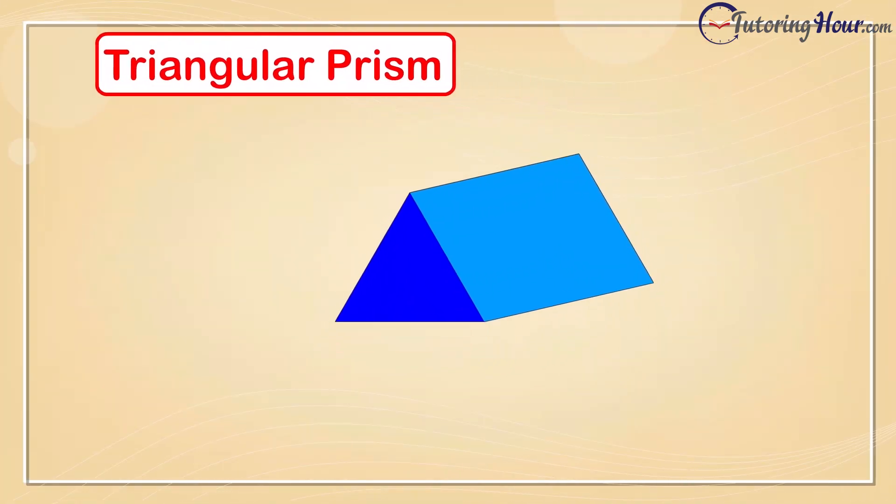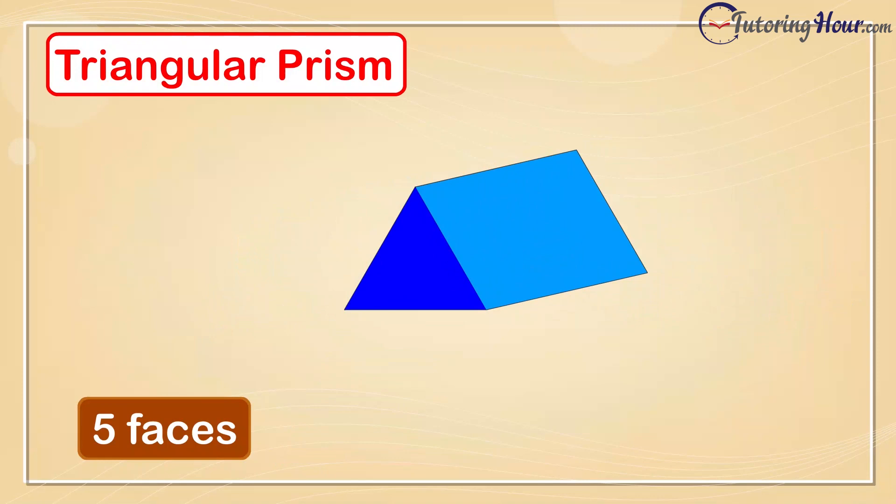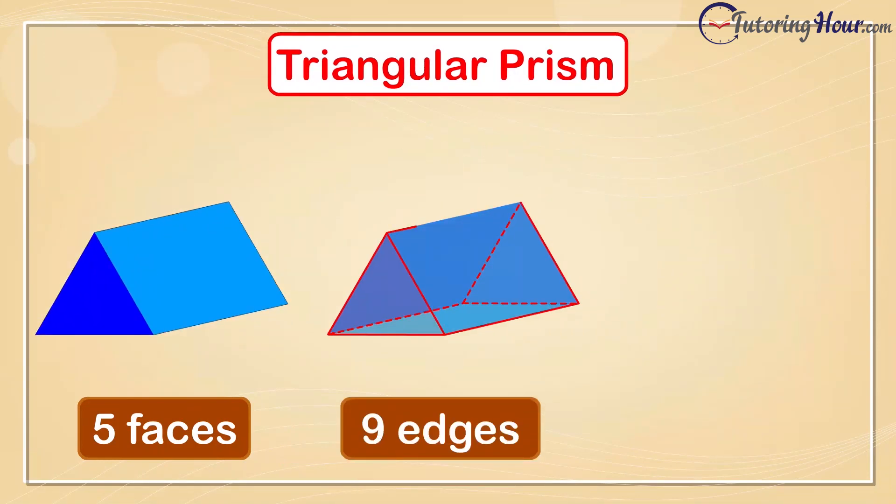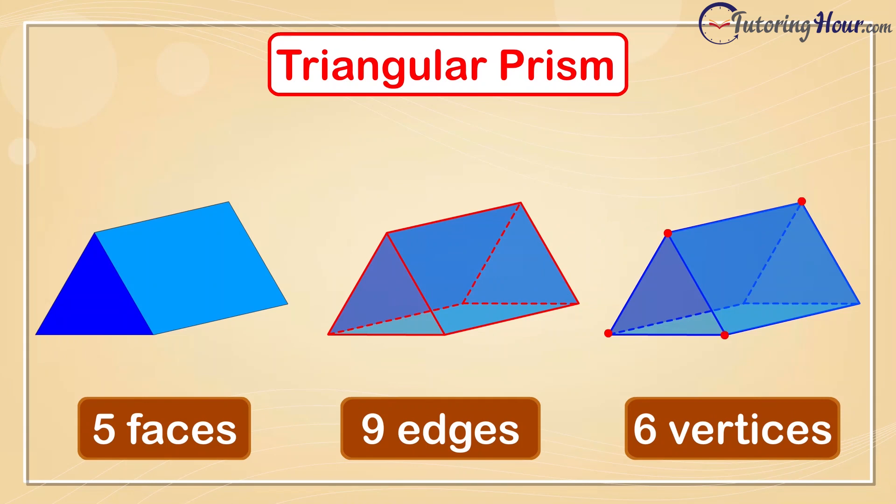What's next? A triangular prism. It has 5 faces. A triangular prism has 9 edges. There are 6 vertices or corners.